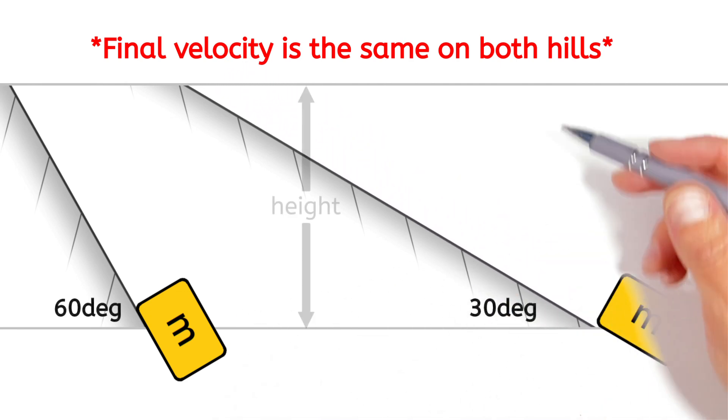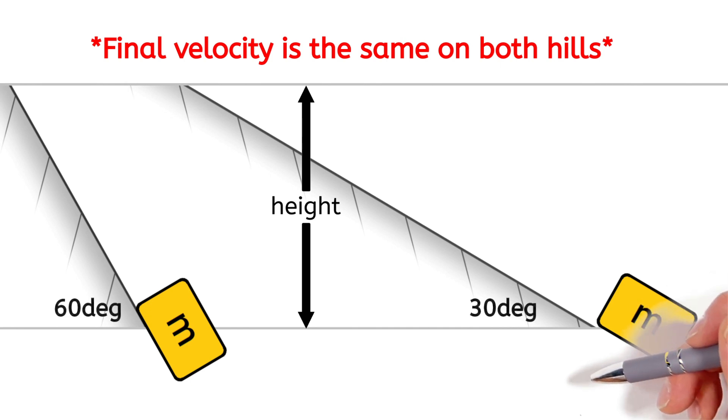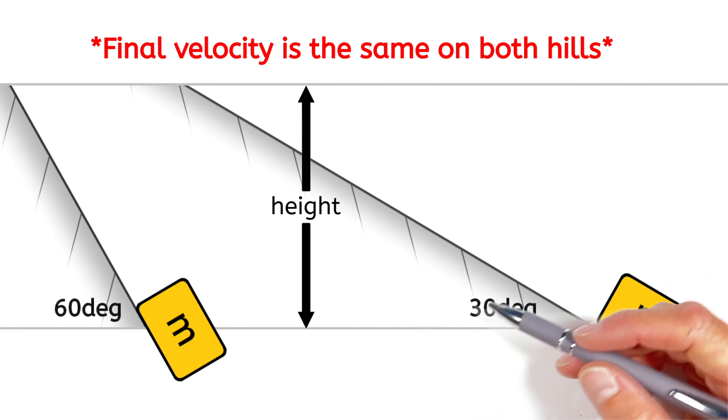That is to say, it's only the height of the hill that determines the velocity of the block at the bottom, not the angle.